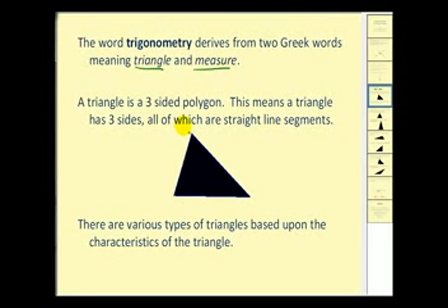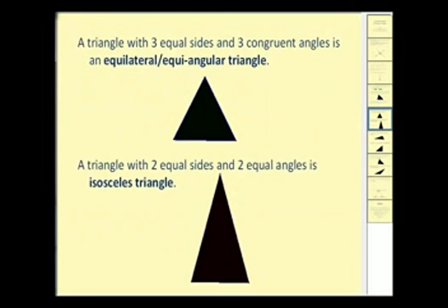Okay, let's now talk about triangles. The word trigonometry derives from two Greek words meaning triangle and measure. A triangle is a three-sided polygon, which means a triangle has three sides all of which are straight line segments, as we see here. There are various types of triangles based upon the characteristics of the triangle.